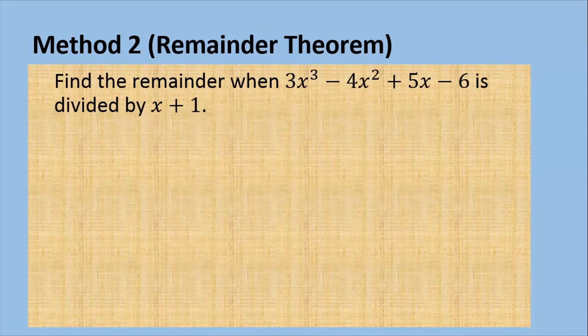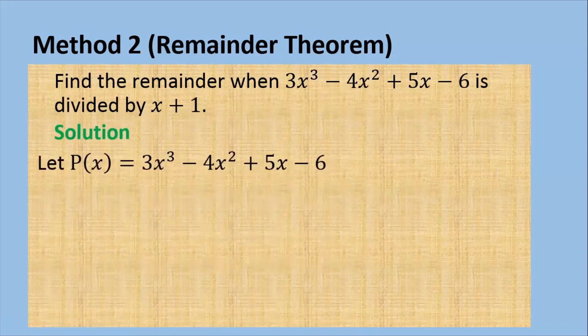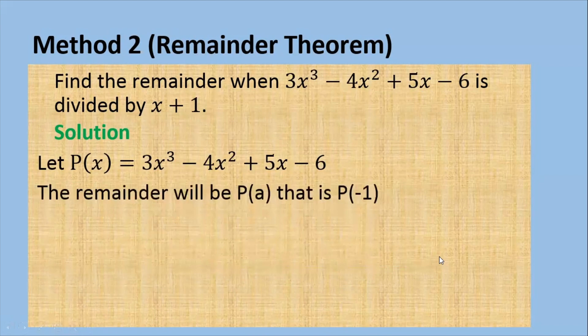Find the remainder when 3x cubed minus 4x squared plus 5x minus 6 is divided by x plus 1. You always start with p of x equal to 3x cubed minus 4x squared plus 5x minus 6. The remainder will be p of a. You equate x plus 1 to 0, therefore x equals minus 1. So p of a is simply p of minus 1.